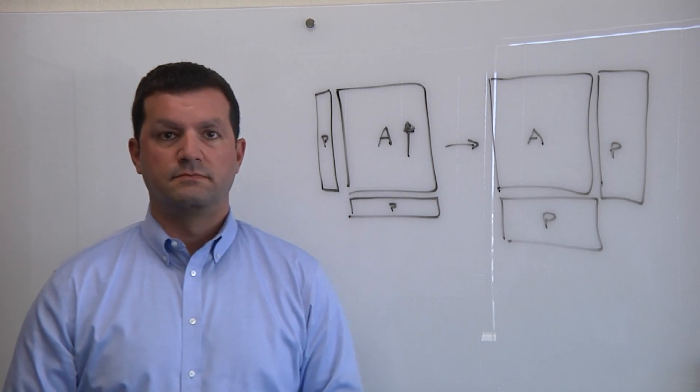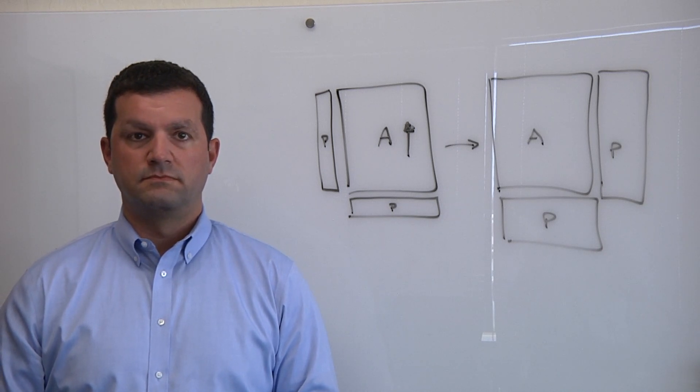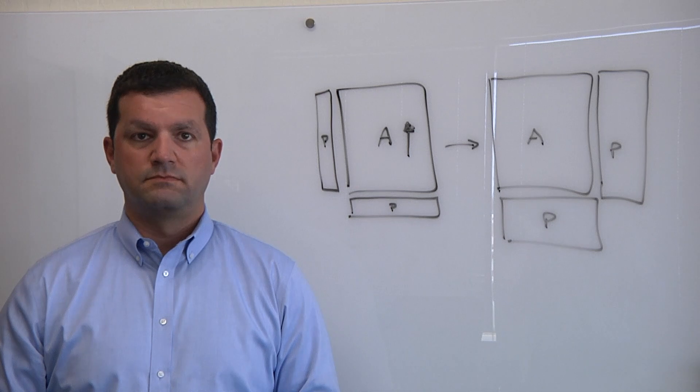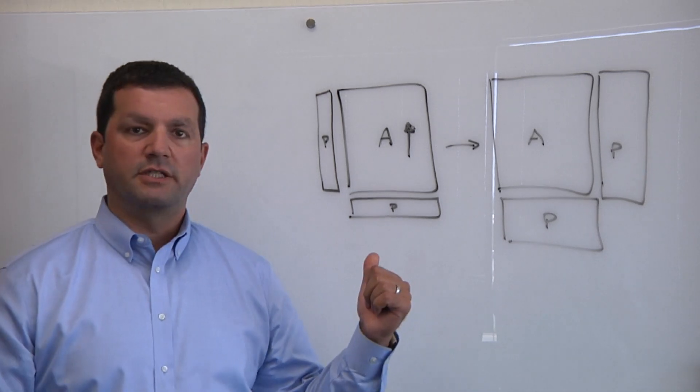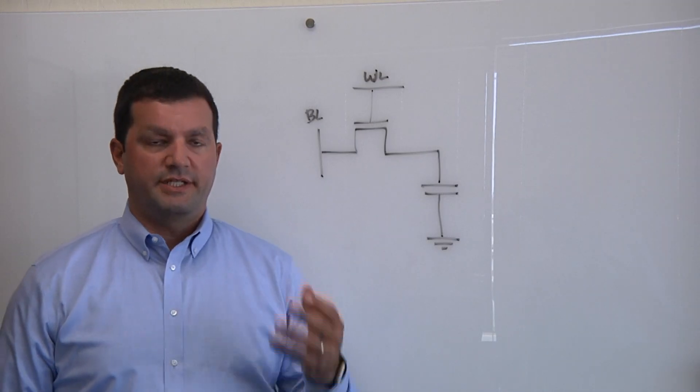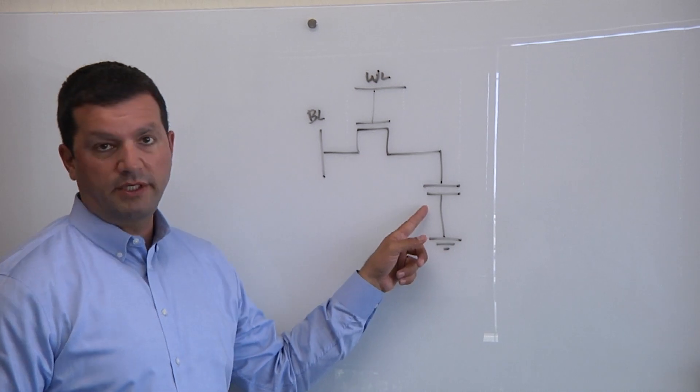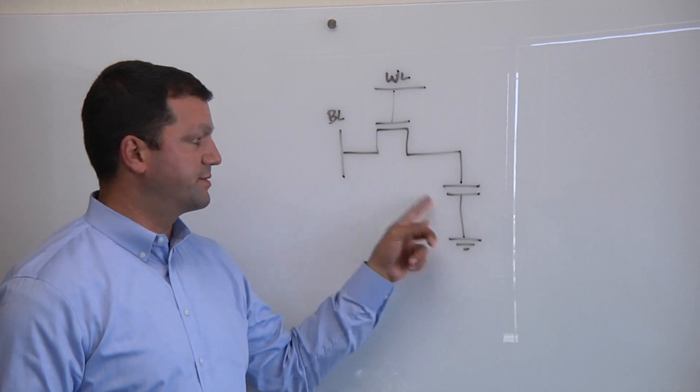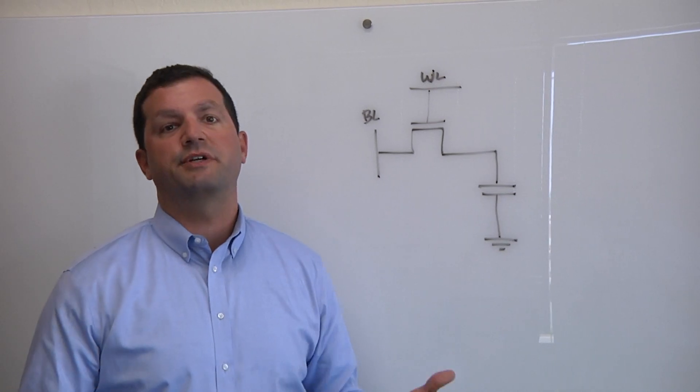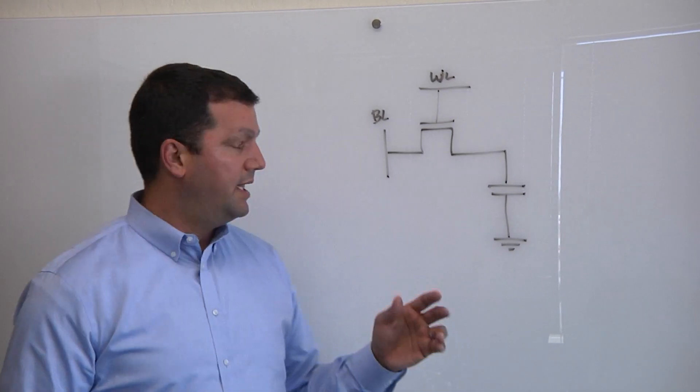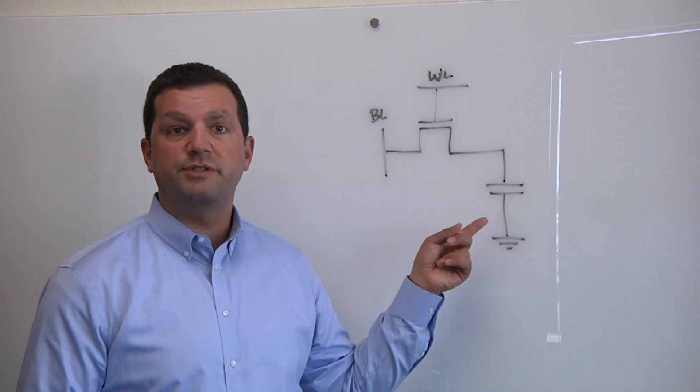We're well aware of the problems when we scale logic. What happens when you scale DRAM? Do you start running into issues such as data retention? Oh, absolutely. Let's take a look at this on the board. Essentially, a single bit of DRAM is just one transistor and one capacitor. The fact that it's just one transistor and one capacitor is the genius of DRAM. It's what's made it so small, so dense, and so scalable for so many years. But to understand how scaling impacts the performance, you really just have to look at those two pieces.